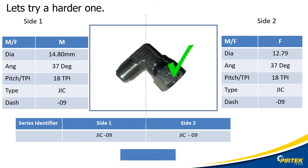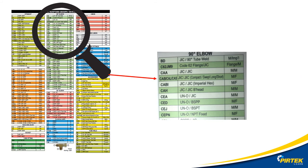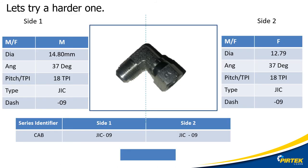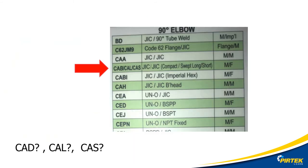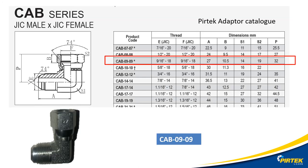We have our thread information — all we need now is the series identifier. From the adapter chart, we know it's a 90 degree elbow with both JIC threads, one male and one female, so we have a CAB identifier. Note that on the identification chart it says male, female — so the male thread form and dash number must be specified first, before the female dash number for the CAB series adapter. Both ends are dash 09, so it's a CAB-09-09. I'll double-check the PERTEC catalogue on a few dimensions to confirm we're definitely a CAB adapter.